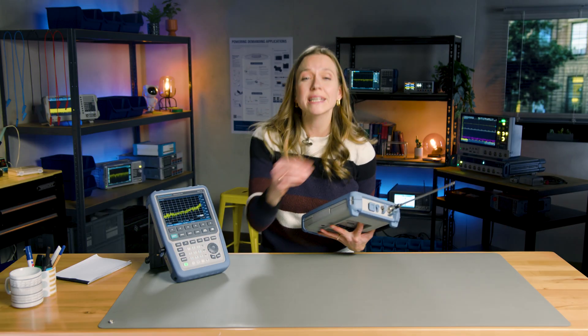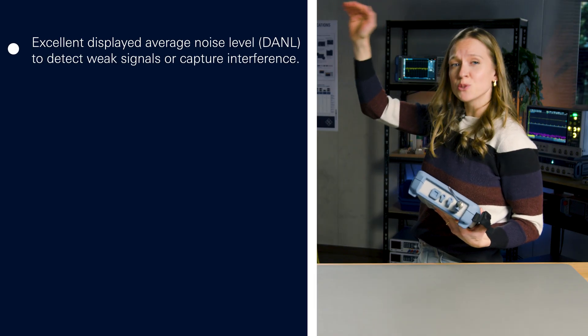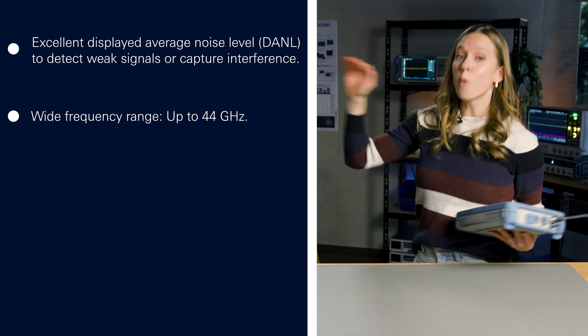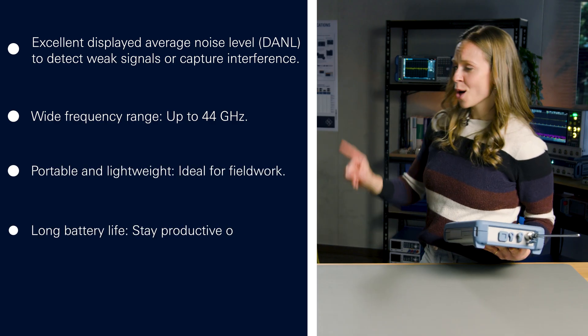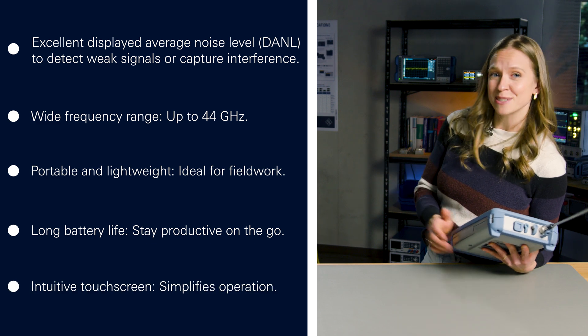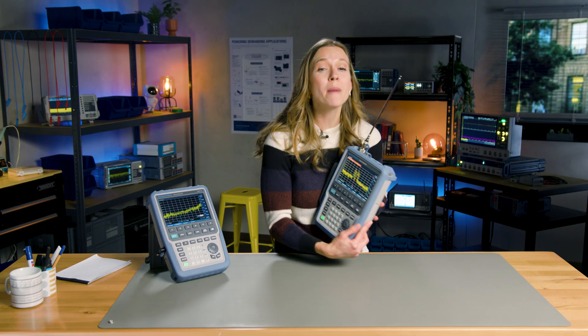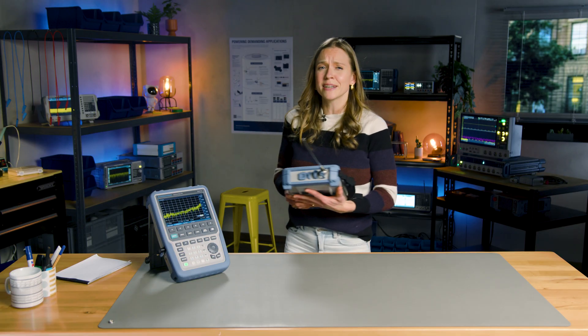This allows you to quickly identify signal sources, analyze interference, and measure signal strength. Why choose the FPH? Here are the highlights: excellent displayed average noise level to detect weak signals or capture interference, wide frequency range, portable and lightweight — ideal for field work, long battery life, and an intuitive touchscreen. Whether you're analyzing interference or measuring signal strength, the FPH was designed to make your work easier and more precise.